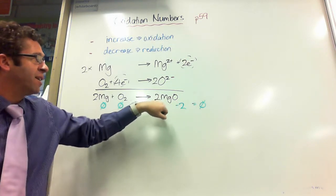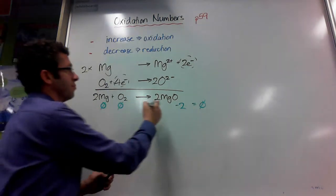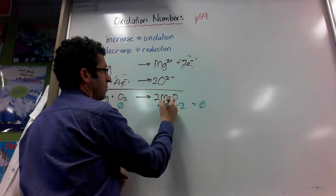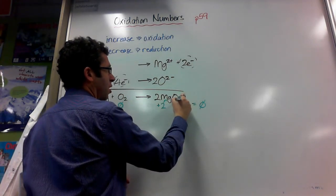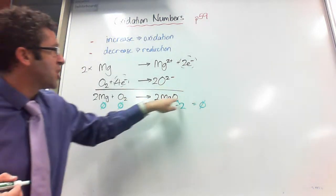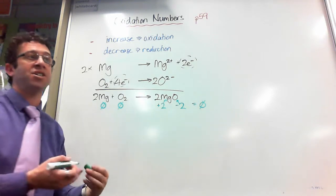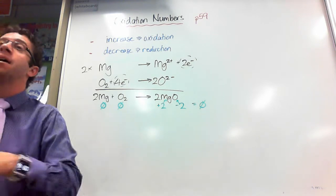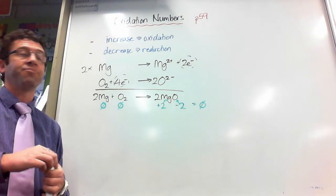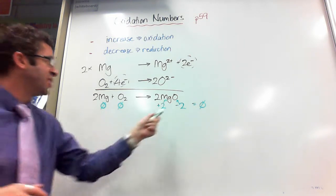So, that means I know whatever the other thing in there is, must be positive two. So, magnesium is positive two. Oxygen is negative two. And when I add them together, it's zero because there's no charge in a compound. So, the sum of the oxidation numbers in a compound must be zero. Elements themselves are always zero.